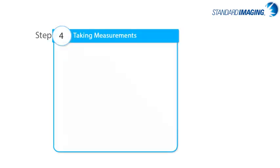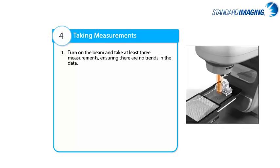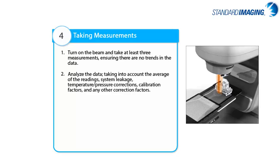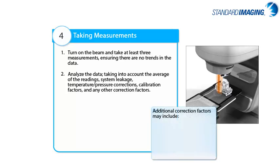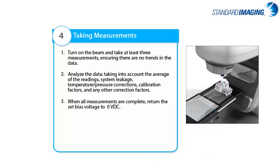You are now ready to take measurements. Select the appropriate LINAC settings and take at least three data points to ensure no trending of your values. Analyze your data and apply the necessary calibration and correction factors to get to your final value of interest, which is typically dose. Some examples of correction factors include those for polarity effects, ion recombination effects, detector volume averaging, and energy dependence. Once you are done with measurements, return the bias to zero volts and turn off the electrometer, and disassemble the instruments carefully.